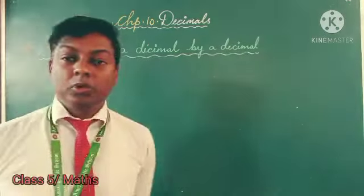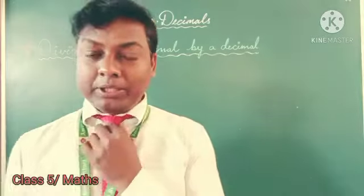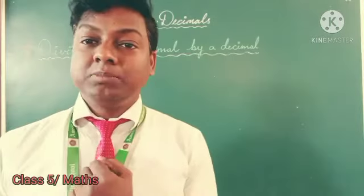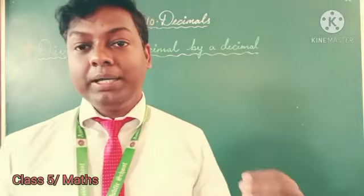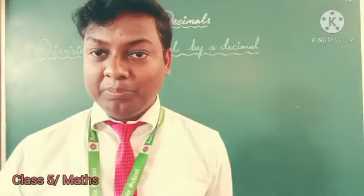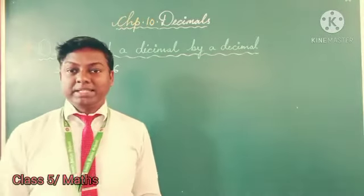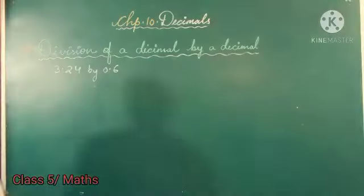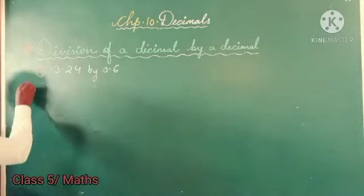Last time we have seen division of decimal by a whole number, but today we will see decimal by decimal. Division of decimal by decimal. Let us see some examples. Here is the example for you: 3.24 by 0.6, so we will divide 3.24 by 0.6.